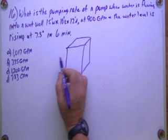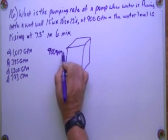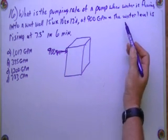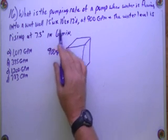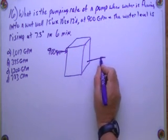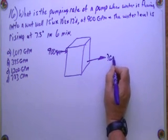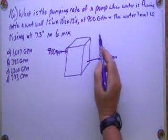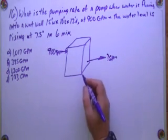And it's flowing in at 900 GPM. The water level is rising. It wants to know the pump rate of the pump, assuming that means the pump that's out. GPM. The water level is rising 7.5 inches in 6 minutes.